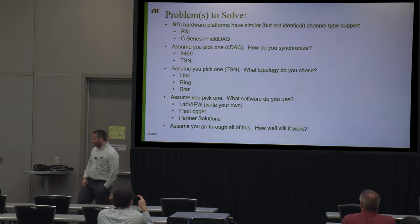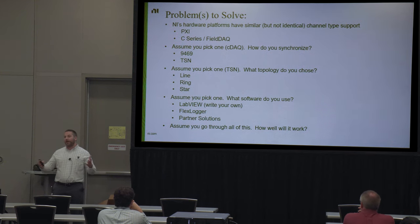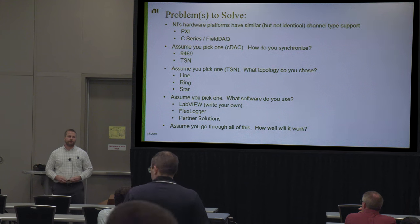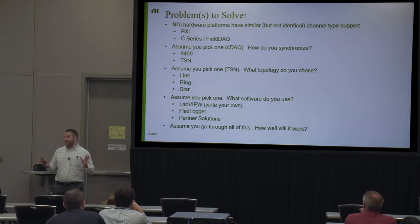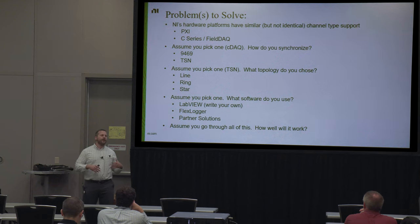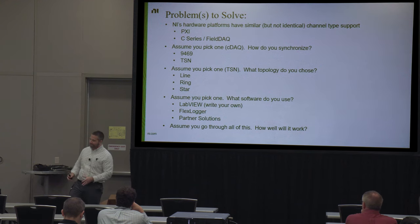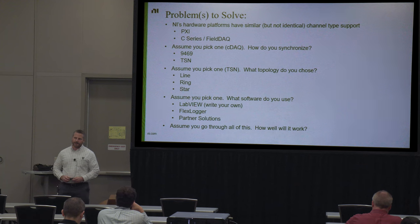So what problem are we trying to tackle with this architecture? If you go to ni.com and look at the product catalog, there are lots of options and it can be overwhelming to figure out how to solve this problem. Right off the bat you've got PXI and C-Series, which have similar capabilities and channel type coverage but are not identical. There are differences in cost, environmental specs, channel density, and measurement performance. And let's say you decide on C-DAQ — how are you going to synchronize all the data? There are options like the 9469 for trigger routing or something more time-based like TSN.